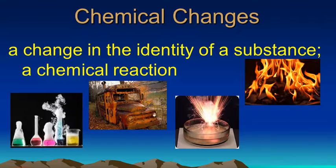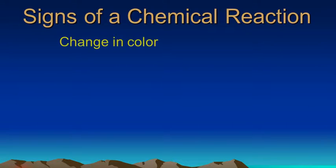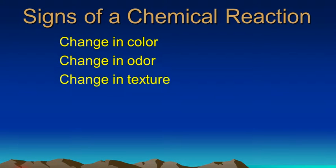Now, when there's a chemical change or a chemical reaction, there are a few things you can look for to know that there's a chemical change taking place. For example, if you see a change in color or a change in odor or a change in texture of an object, those are good signs that a chemical reaction is taking place.